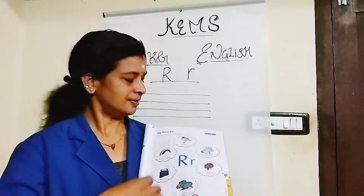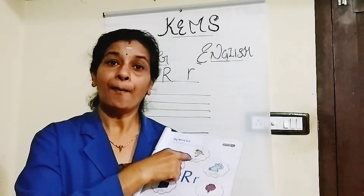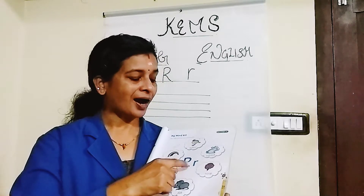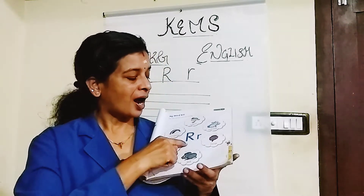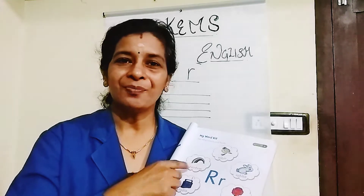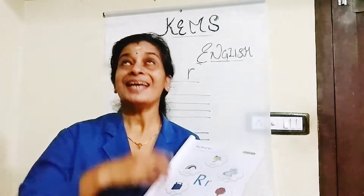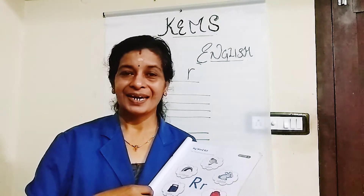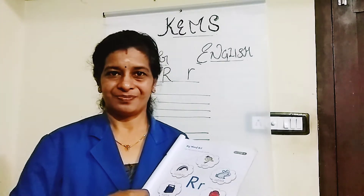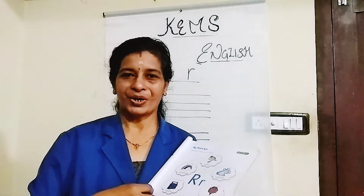Listen. R for Robin — this is a bird. R for Rabbit. R for Rose. R for Rat. R for Radio. R for Rainbow. Rainbows appear in the sky. There are seven colors in a rainbow. How many colors? Seven colors.